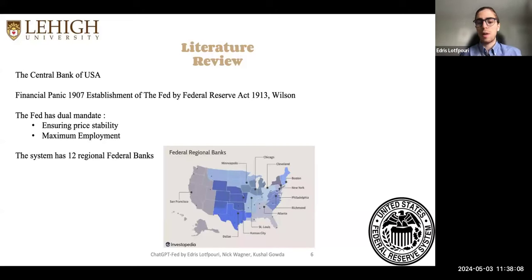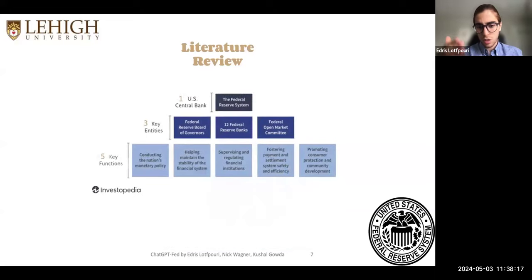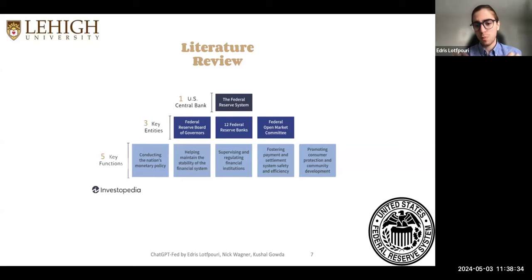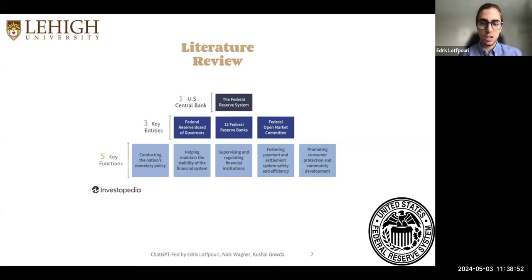To give a quick background about the Fed and why it's important: the Fed is the central bank of the USA. We have 12 regional Federal Reserve Banks, and the Federal Reserve System has three key entities — the Board, the 12 central banks around the country, and the Open Market Committee. In our research, the most important ones are the Board and the Federal Open Market Committee, because they publish the statements and have meetings eight times a year where they announce decisions about interest rates and their view on the economy. The original purpose of the Fed is dealing with inflation and keeping the unemployment rate low.